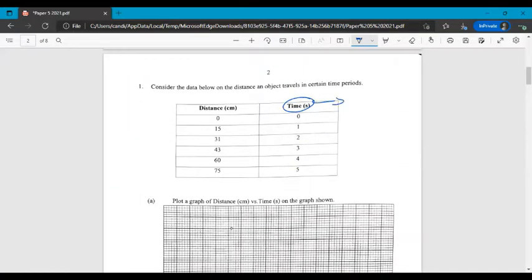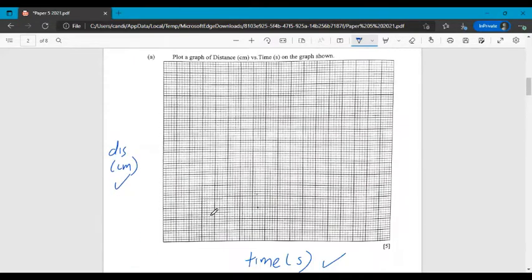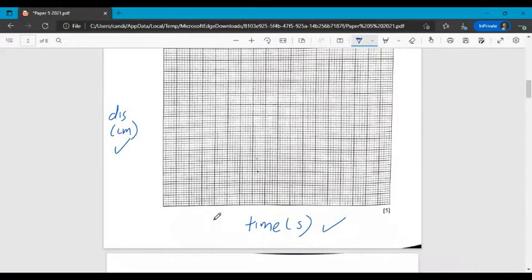So for time, we need to plot from zero to five. And for distance, we need to plot from zero to 75. Don't make a mistake and think that the only values that you're plotting on this graph are what you see in the table.